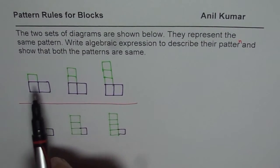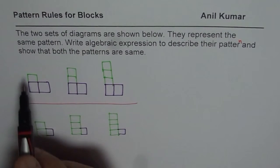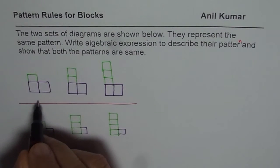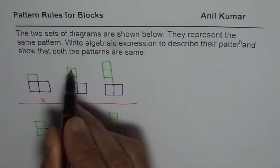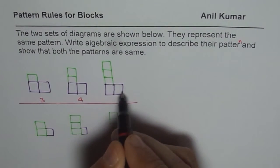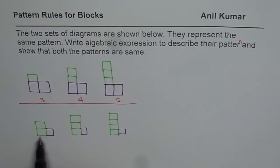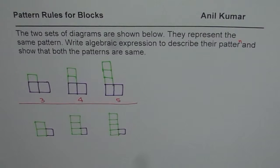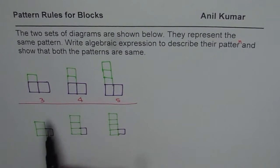You'll notice that both patterns have the same number of blocks. The number of blocks in the first set are three, four, and five. The second set also has three, four, and five blocks. So strictly speaking, the patterns are exactly the same, but the way they have been colored is different. The reason is that the coloring helps you to write down an algebraic expression.